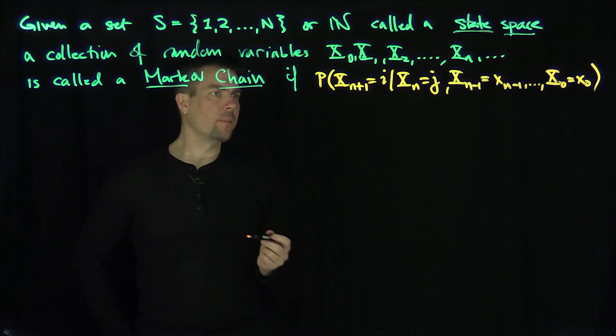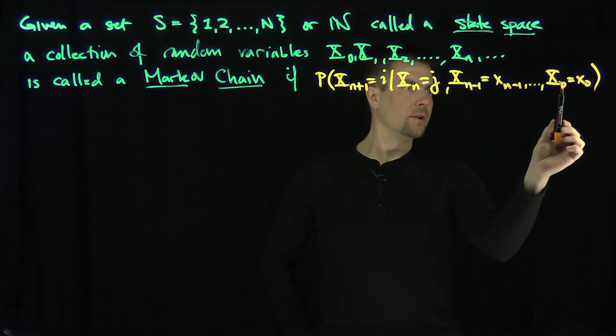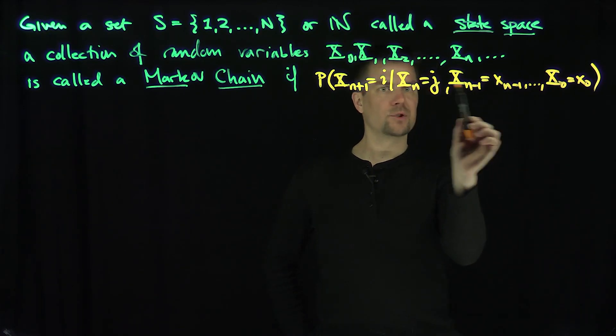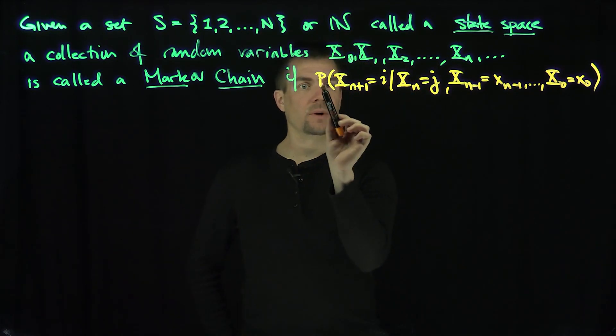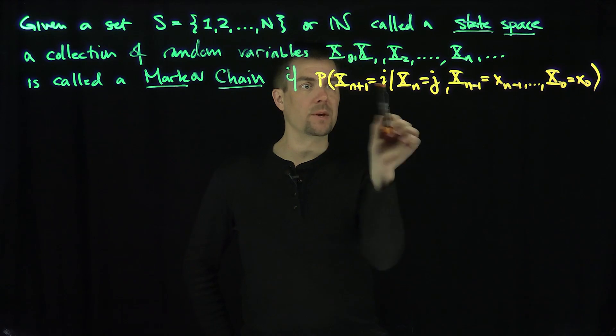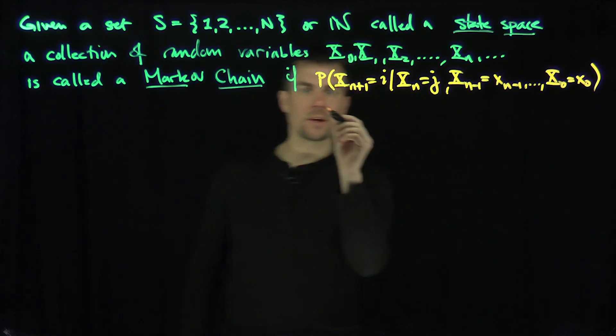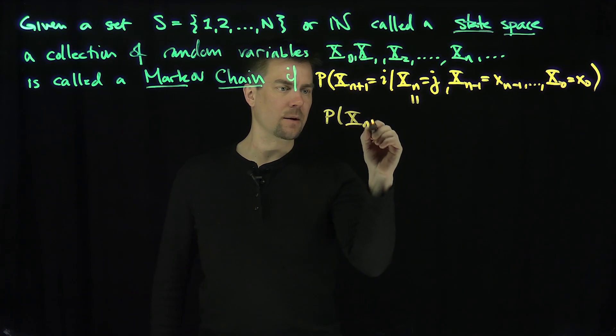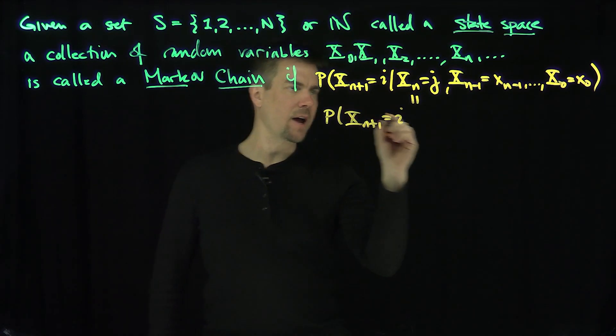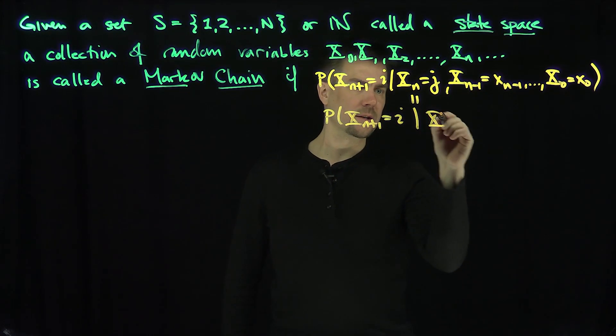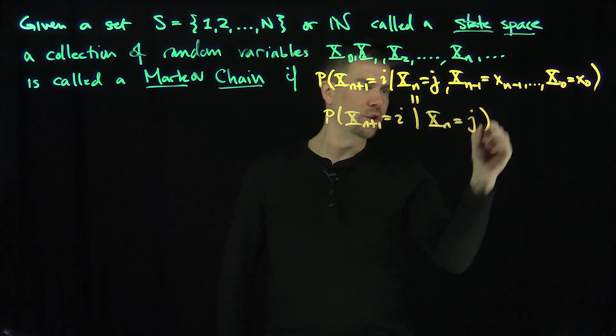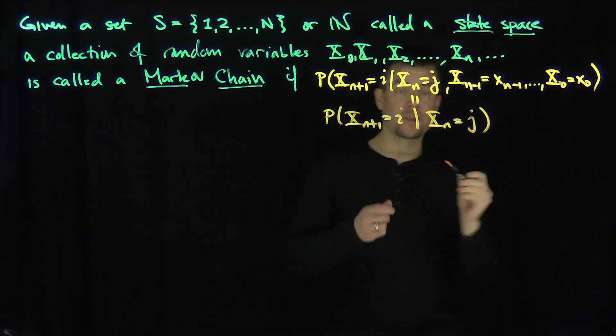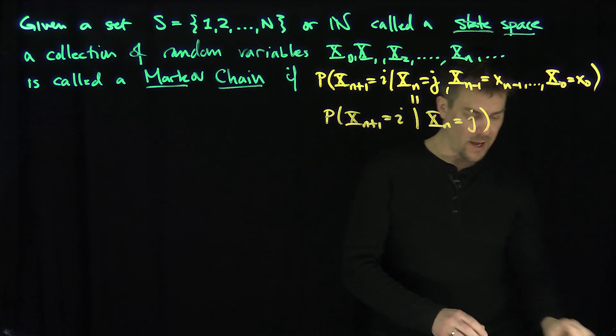So if I know the information about all of the process at time 0, at time 1, at time 2, at time n, and I ask what's the probability of the n+1 step being equal to i, this is simply equal to nothing more than just probability that x_n+1 equals i given that x_n was equal to j. So I don't need to, I can forget about the distant past.